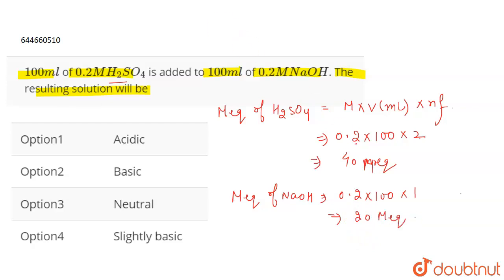Without even calculating the pH, we can simply understand that the milliequivalence for H2SO4 is greater. H2SO4 has 40 milliequivalence whereas NaOH is just 20.